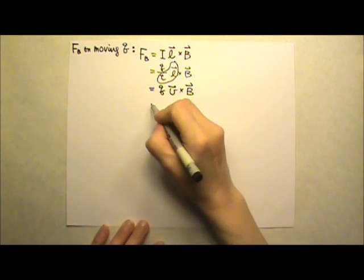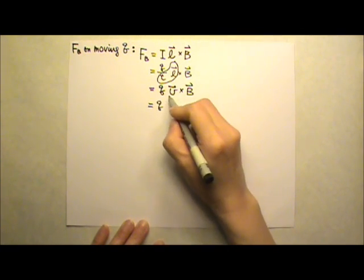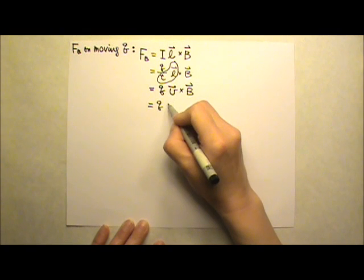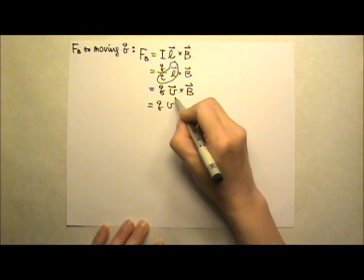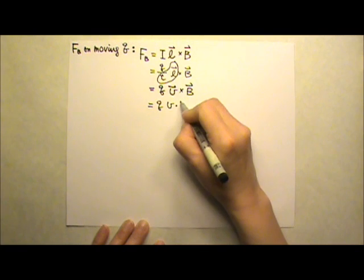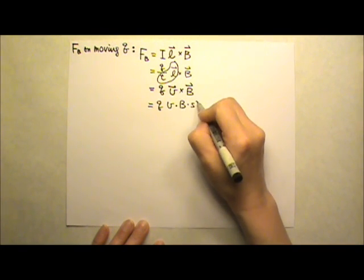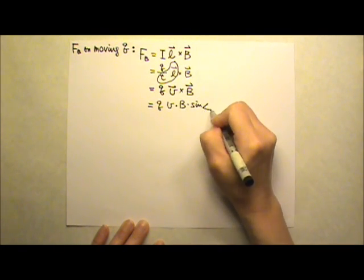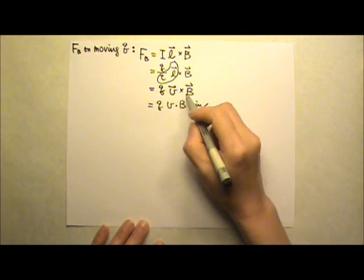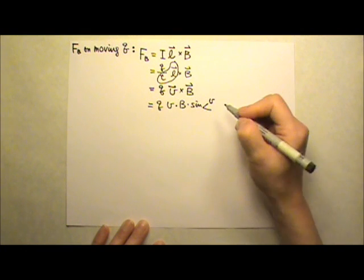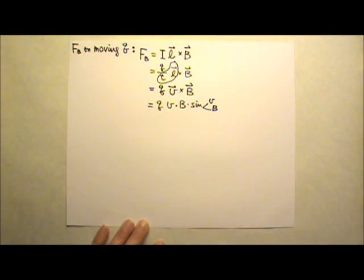The cross product is the magnitude of the first vector times the magnitude of the other vector times the sine of the angle between the two vectors — so it's sine of the angle between V and B.